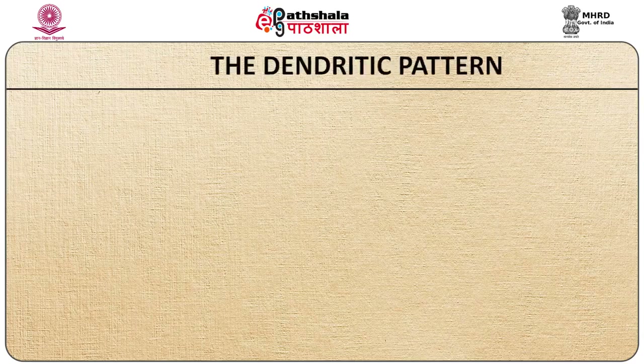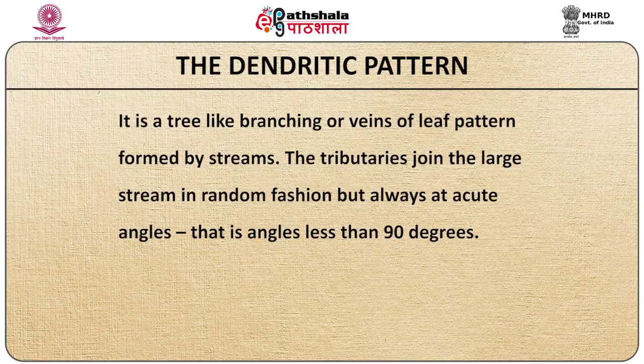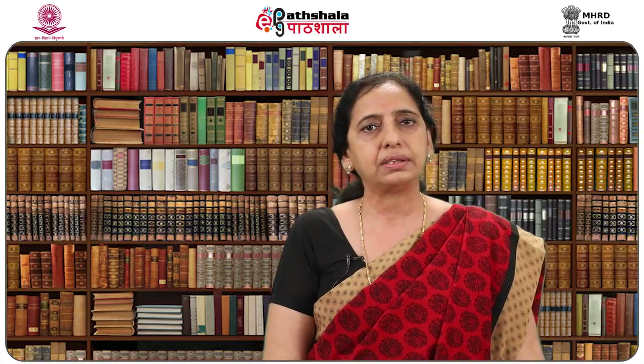We will first talk about the dendritic pattern. It is a tree-like branching or veins of leaf pattern formed by streams. The tributaries join the large stream in random fashion but always at acute angles, that is, angles less than 90 degrees. This is the most common pattern in the major streams of the world. The underlying structure does not control the flow pattern of stream as rocks are equally resistant to erosion. Uniformly resistant crystalline rocks with horizontal sediments and gentle regional slope marks the landscape. The development of dendritic pattern is a two-stage process: at the outset the stream flows downward and increases in numbers, and in the final stage, stream capture of small tributaries by the large ones completes the pattern.